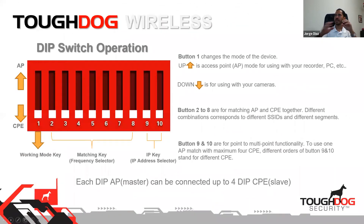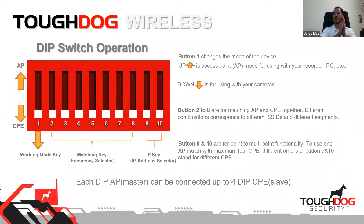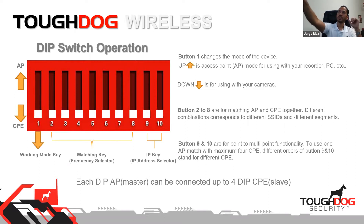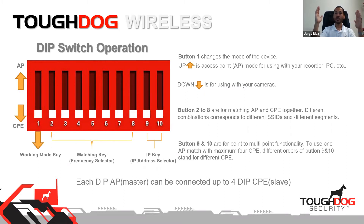Let me illustrate the DIP switch operation. Switch number one determines whether the unit is an access point or a client. On point-to-point installations, all you do is move switch one to 'access point' on the access point unit, and leave everything off on the client unit — just as it comes from the factory. That eliminates a lot of work, and your devices are going to work.